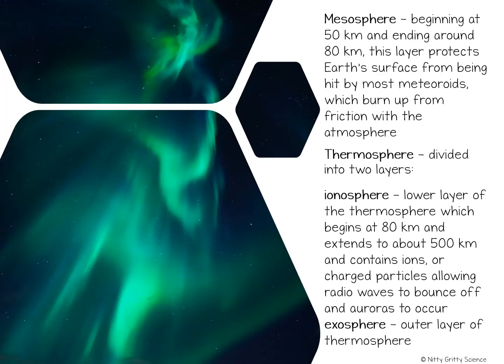Above the stratosphere there's a drop in temperature, and this marks the beginning of the mesosphere. Meso means middle, and this is the middle layer of the atmosphere. The mesosphere extends from 50 kilometers to 80 kilometers above Earth's surface, and it is the coldest part of the atmosphere with temperatures near negative 90 degrees Celsius. The mesosphere protects Earth's surface from being hit by most meteoroids, which are chunks of rock coming from space. If you look up on a starry night and see a shooting star, this is usually a trail of hot glowing gases — the remnants of a meteorite getting burned up in the mesosphere.